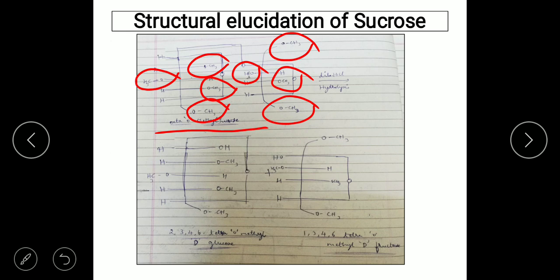On further hydrolysis in the presence of dilute HCl, the octa-O-methyl sucrose is hydrolyzed into two fragments: 2,3,4,6-tetra-O-methyl-D-glucose and 1,3,4,6-tetra-O-methyl-D-fructose. These two fragments confirm that sucrose is a disaccharide of glucose and fructose. The 2,3,4,6-tetra-O-methyl-D-glucose indicates a pyranose structure, and the 1,3,4,6-tetra-O-methyl-D-fructose indicates a furanose ring with a 2→5 linkage.